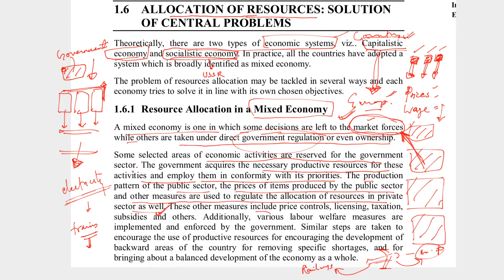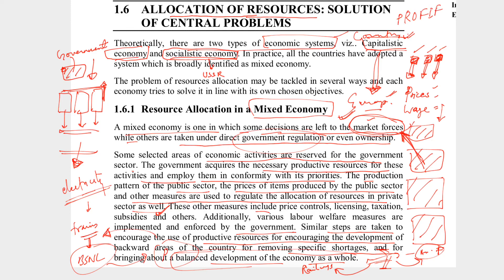Similarly in telecommunications, BSNL provides service at a good rate, so private players think they must control their rates to match BSNL, otherwise no business will come to them. Additionally, various labor welfare measures are implemented and enforced by the government. Similar steps are taken to encourage use of productive resources for developing backward areas, removing specific shortages, and bringing about balanced development in the economy. To bring balanced development, the government maintains control over many things so that private players don't focus only on profit-making — because private means profit and government means welfare.